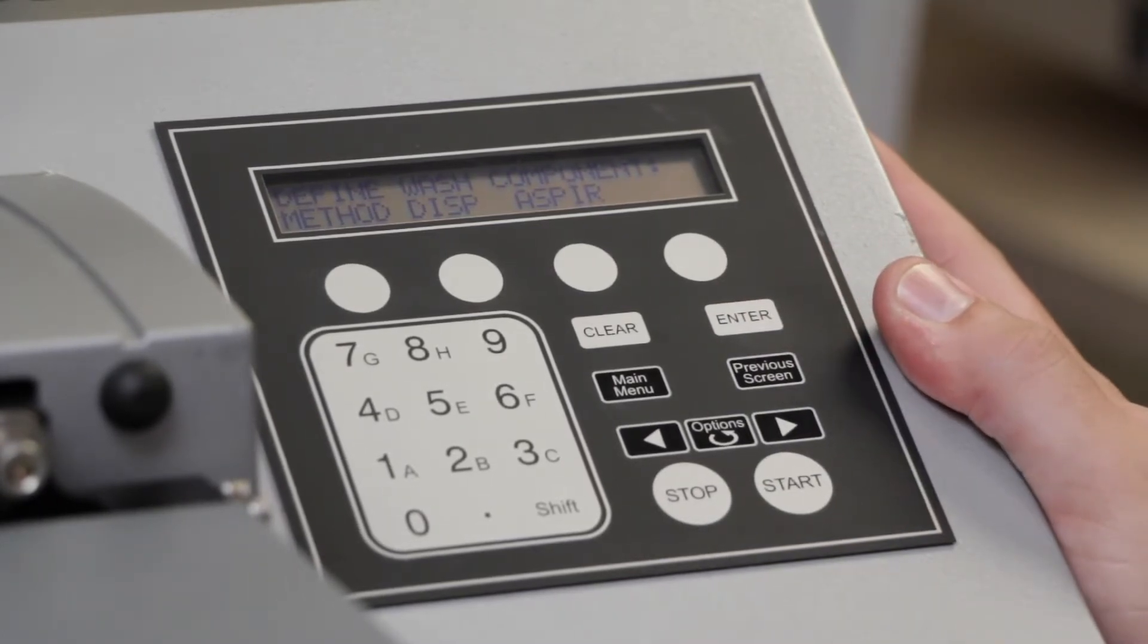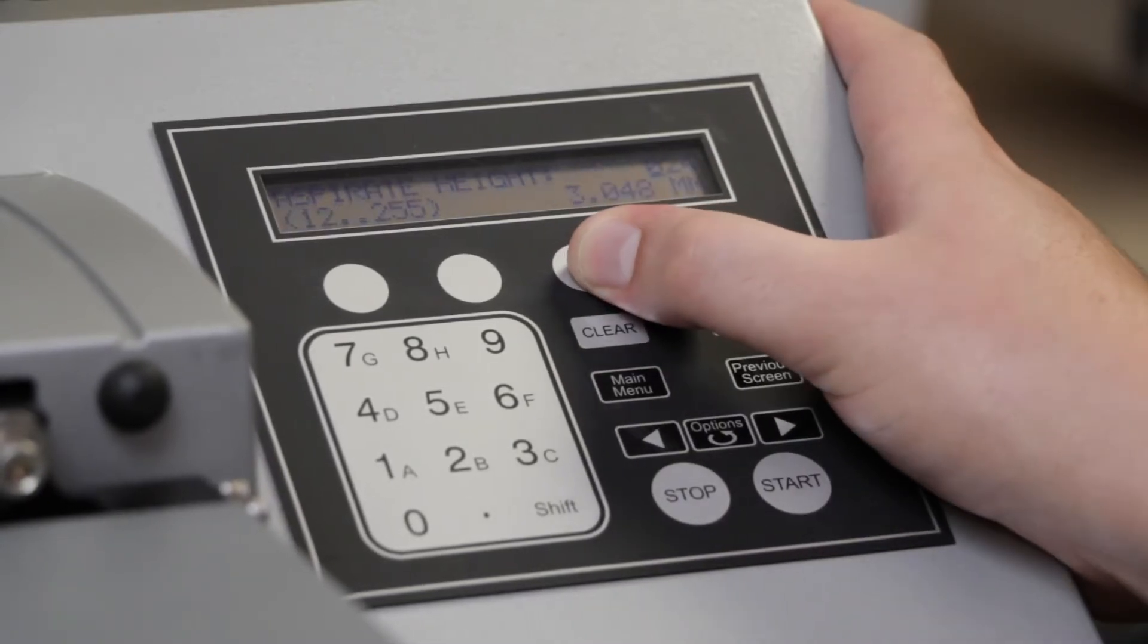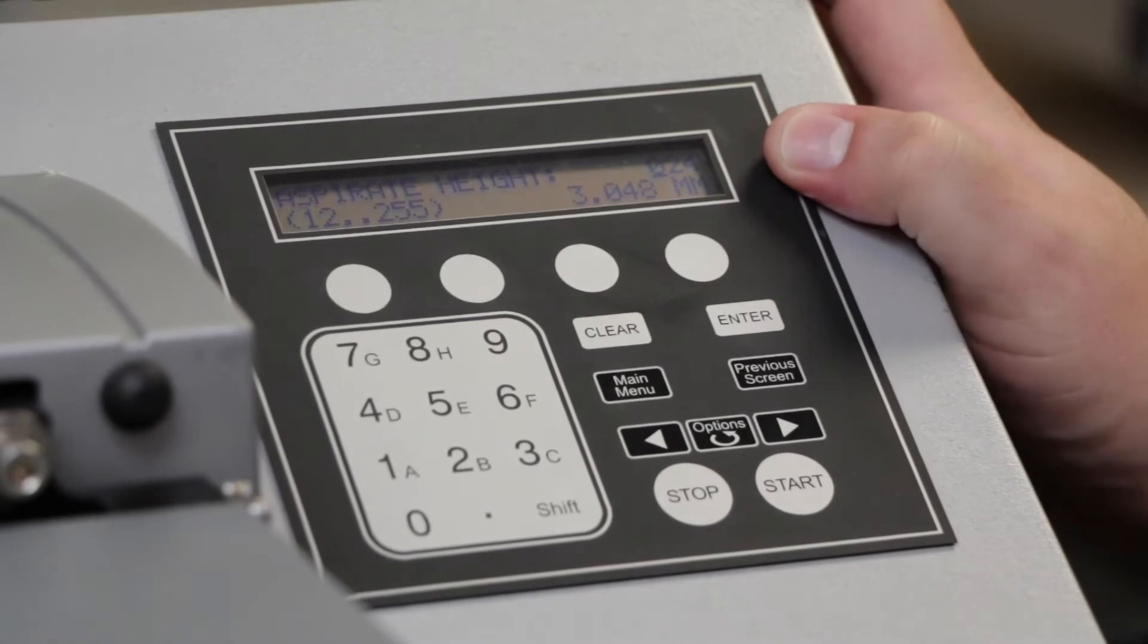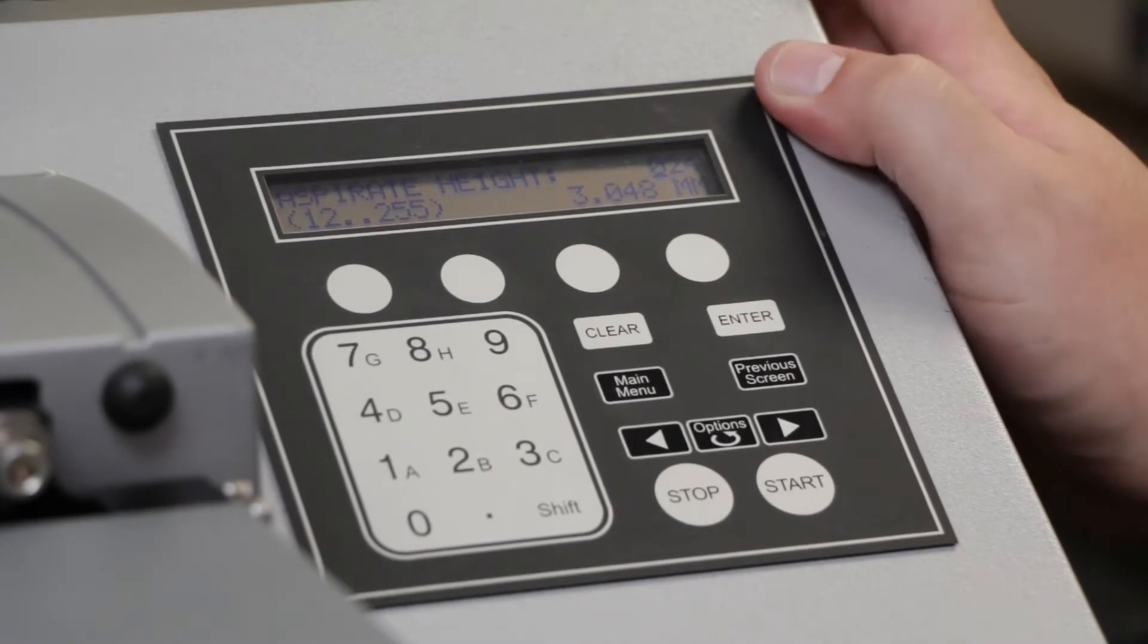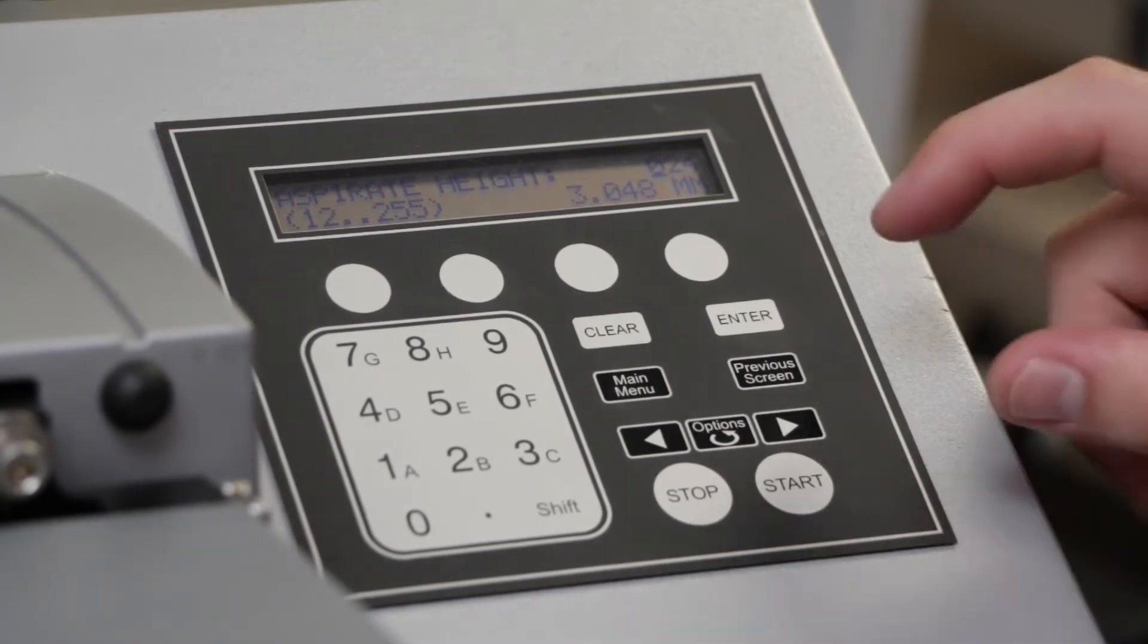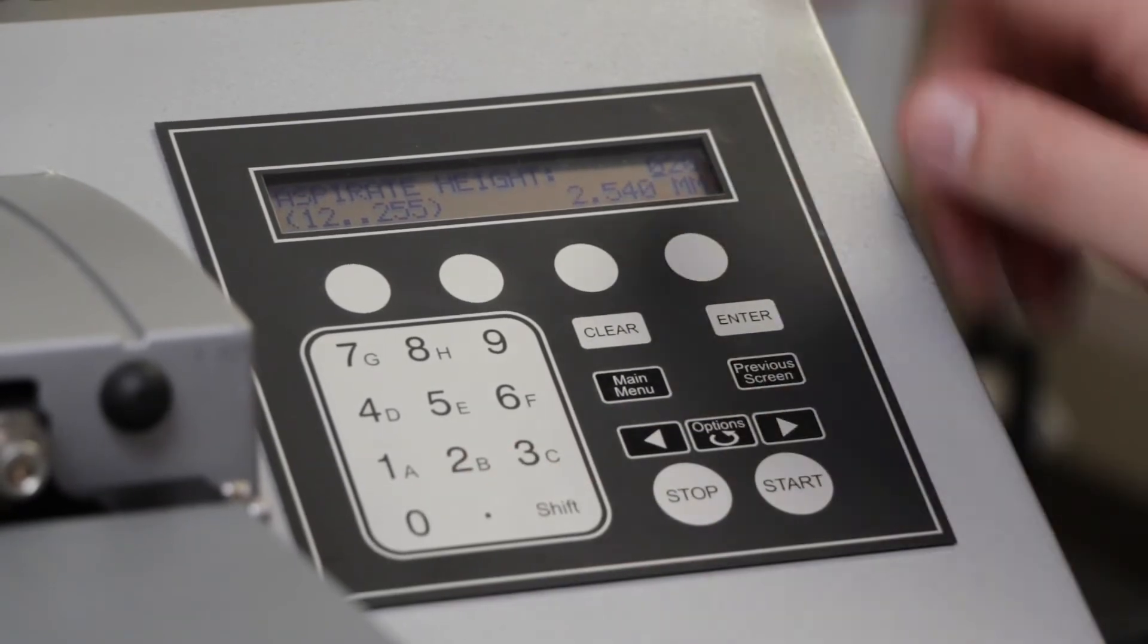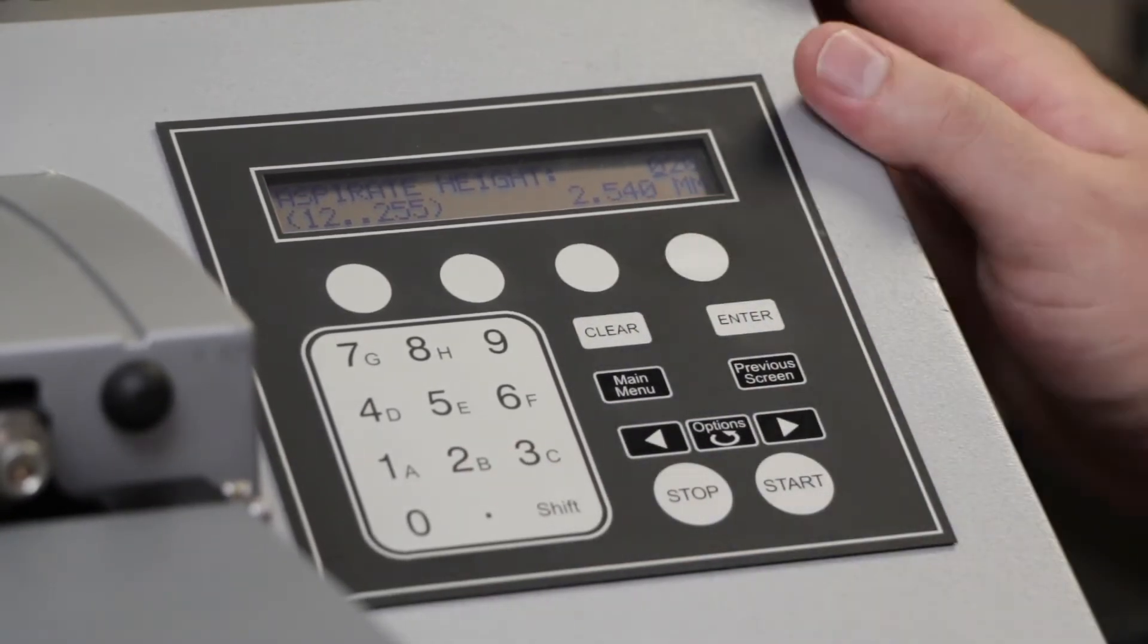Next, we can fully define our aspirate steps. Pressing the aspirate button, we're prompted with our aspirate height. This is where you'll decide how much volume you want to leave in your plates. Again, you'll need technical drawings or to use the adjust utility to truly fine-tune this. But in our case, we're actually going to lower our aspirate height down to the 20 step set point or 2.54 millimeters.